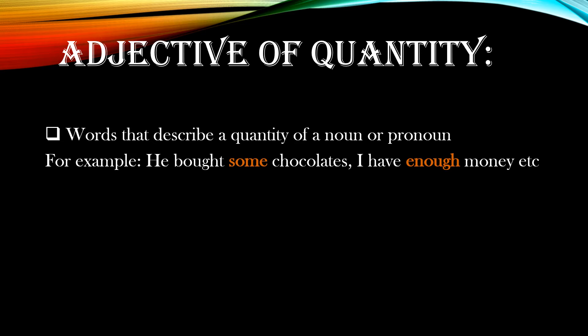Adjective of quantity — these are the words that describe a quantity of a noun or pronoun. For instance, 'he bought some chocolate' and 'I have enough money.' In these examples, some and enough are adjectives of quantity. We may also say 'I have a little amount of money' or 'I have less money.' Little and less are both adjectives of quantity because they describe the quantity of a noun.